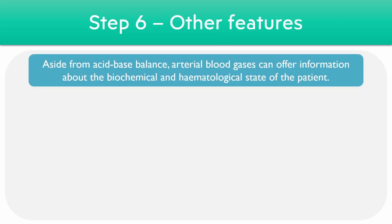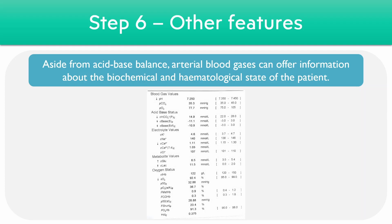The final stage of ABG analysis involves looking at the remaining features on the printout. This can include details about the electrolytes, the glucose level, the lactate, and the hemoglobin. It's important not to overlook these when interpreting the final result.